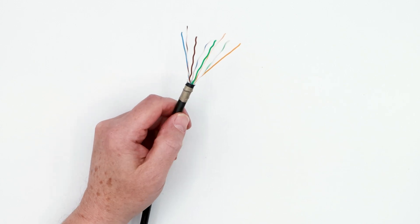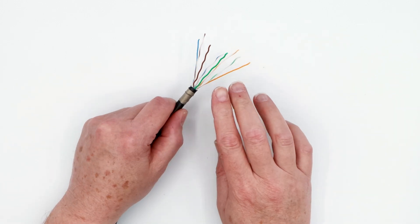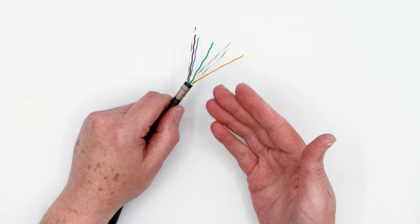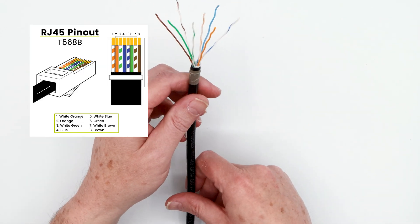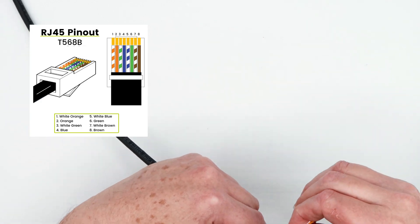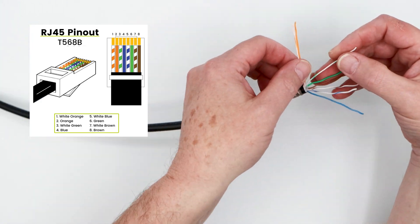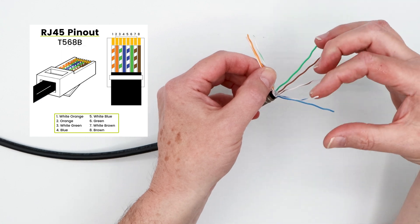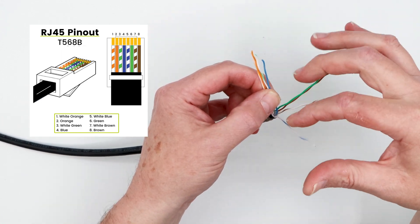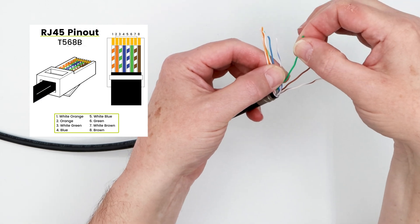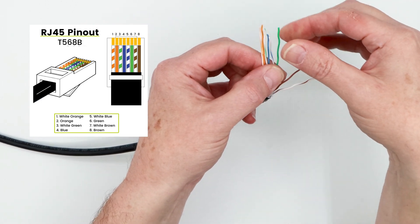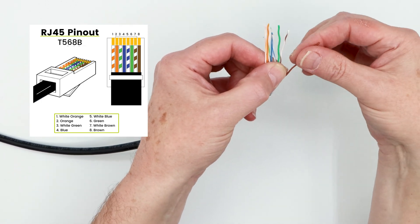So we've got all the conductors straightened out. The next step is to put these into order. We're going to use the T568B sequence. So in this case it's going to be white, orange, orange, white, green, blue, white, blue, green which will cross over, white, brown, brown.